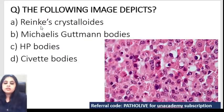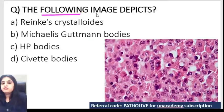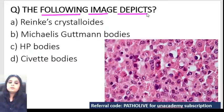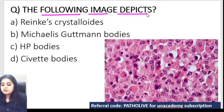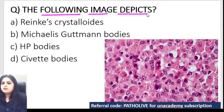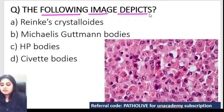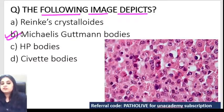Question 5: An image is shown. The options are Reinke's crystalloids, Michaelis-Gutman bodies, HP bodies, and Civatte bodies. The correct answer is Michaelis-Gutman bodies. First, let me cover the others. Reinke's crystalloids are seen in the testes — in Leydig cells. You see them in normal Leydig cells in males, and also in Leydig cell tumors.